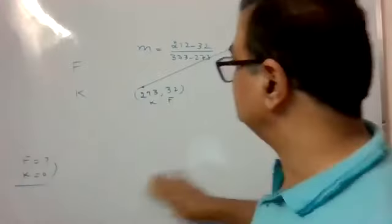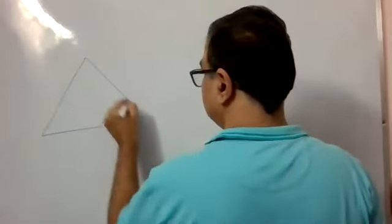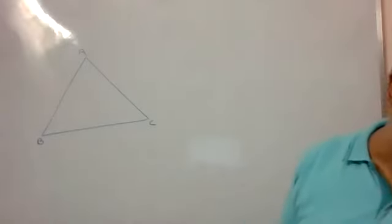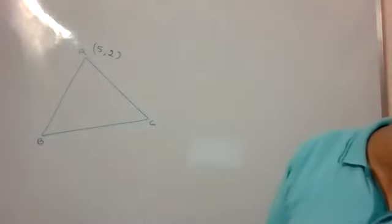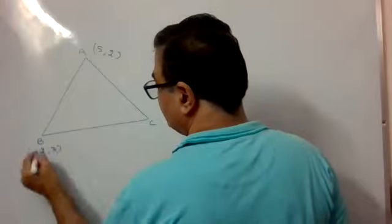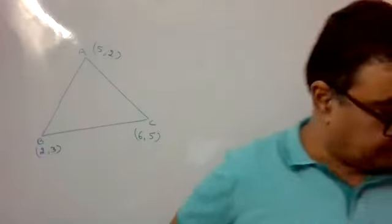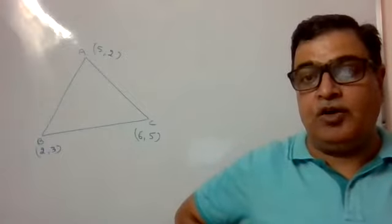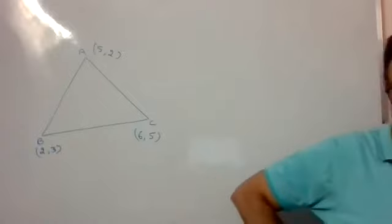Next question: find the equation of the internal bisector of angle BAC in triangle ABC, where A is (5,2), B is (2,3), and C is (6,5).